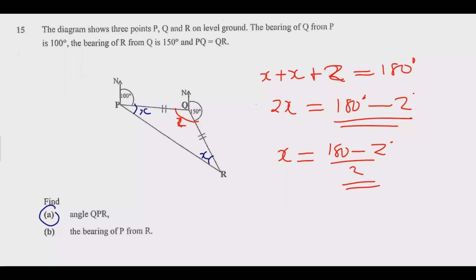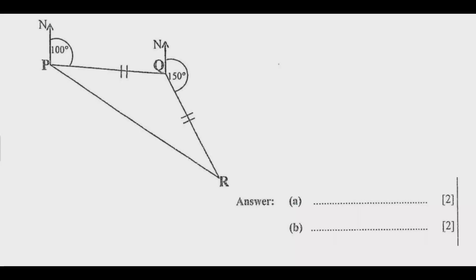To find Z, we use corresponding angles from parallel lines. If you have two parallel lines - remember north lines are parallel - then we cut like this, corresponding angles are equal. Based on that principle, if this angle is 100 degrees, then this angle Y should also be 100 degrees.